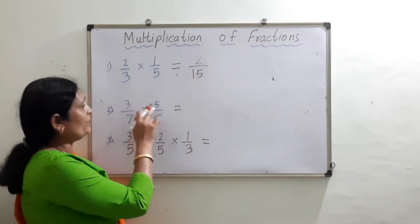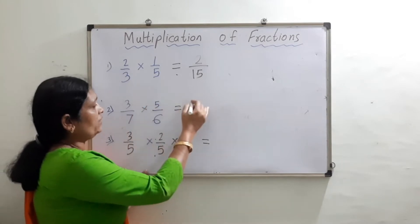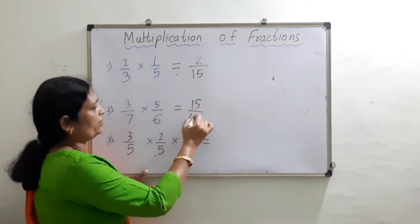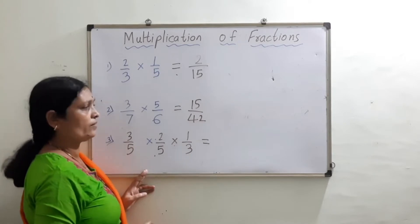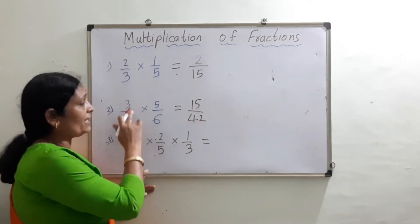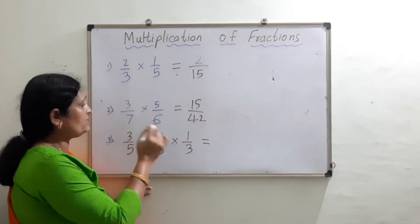Same thing applies here. We will be multiplying the numerators: 3 into 5 is 15, and 7 into 6 is 42. This is our final answer. Okay, now in this case we can even simplify it.